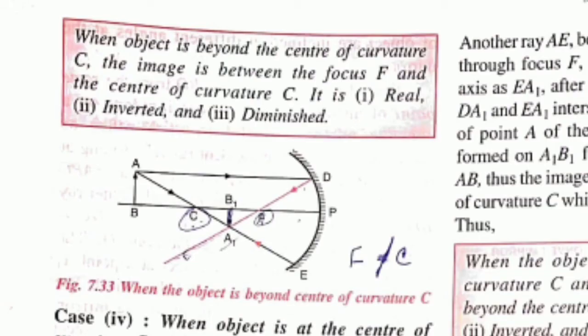The third case is when the object is beyond the center of curvature. The ray of light goes straight toward the center of curvature and reflects back. Where the two reflected rays intersect, the image is formed. The image in this case is real, inverted, and diminished.